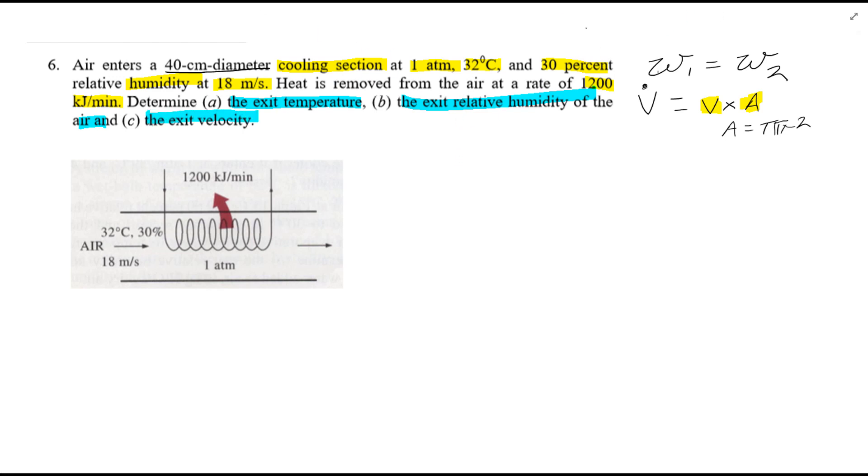In order to find out what we want to know, which is the temperature at T2, the relative humidity at 2, and the exit velocity, if we can find any two values at point 2, then we're able to find these values using chart A31 from the thermodynamics stable booklet.